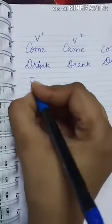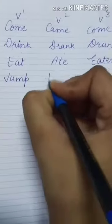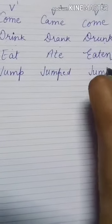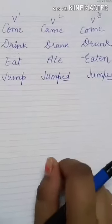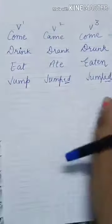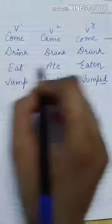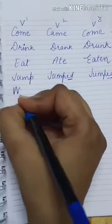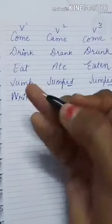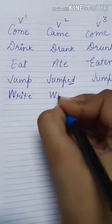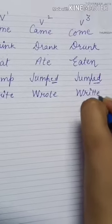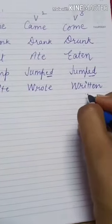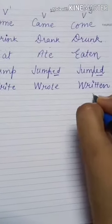For example: come, drink, eat — eat, ate, eaten. Jump, jumped, jumped — here we have used 'ed.' There is a difference between regular verbs and irregular verbs. Regular verbs use only 'ed,' but irregular verbs are totally different in spellings and pronunciation. For example: write, wrote, written. 'I have written my verb' — so 'written' is the third form.